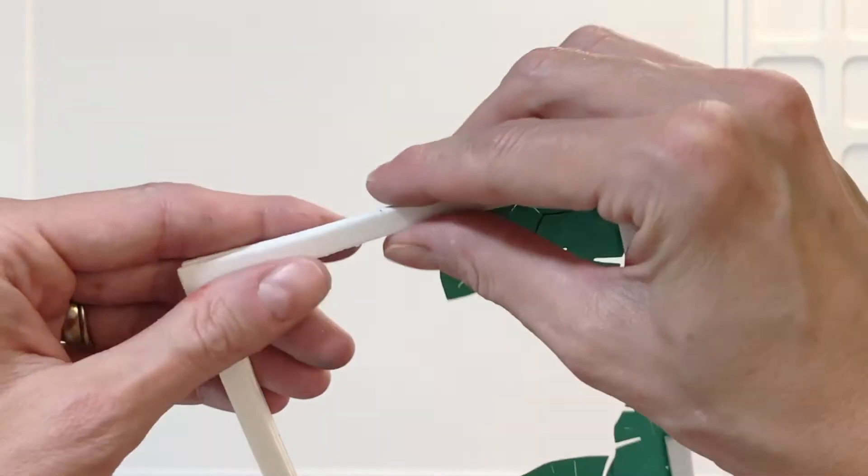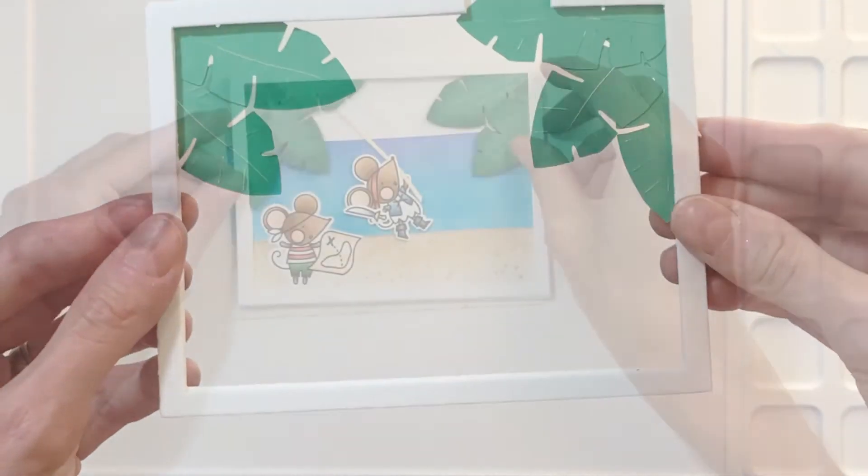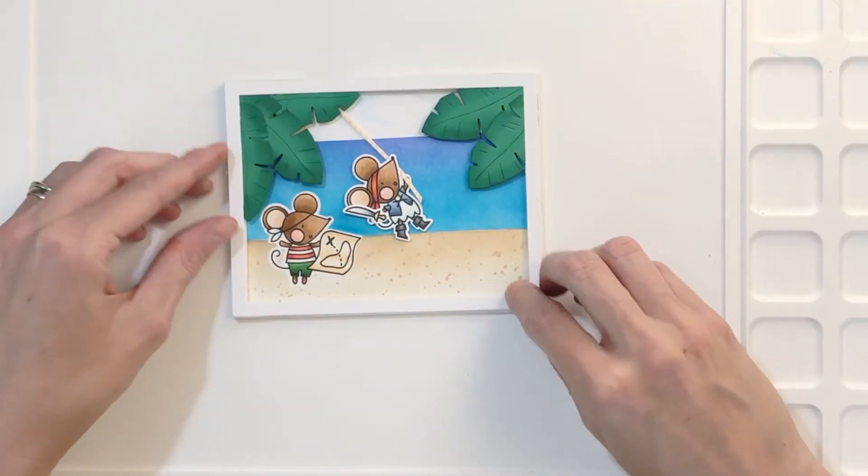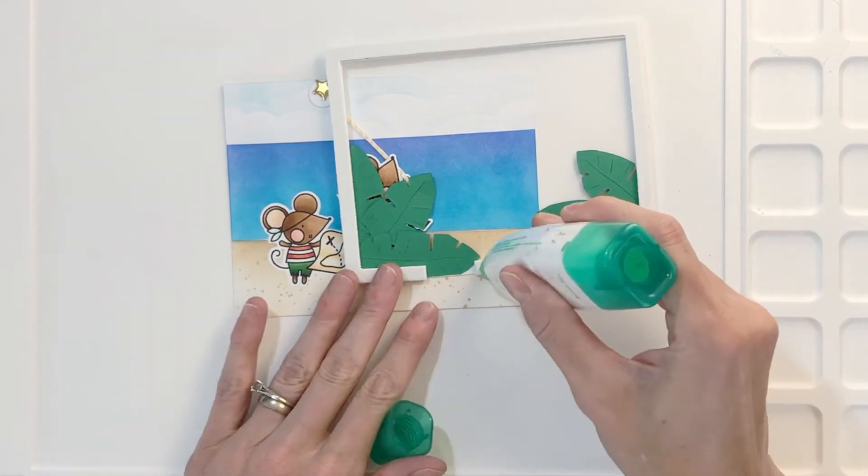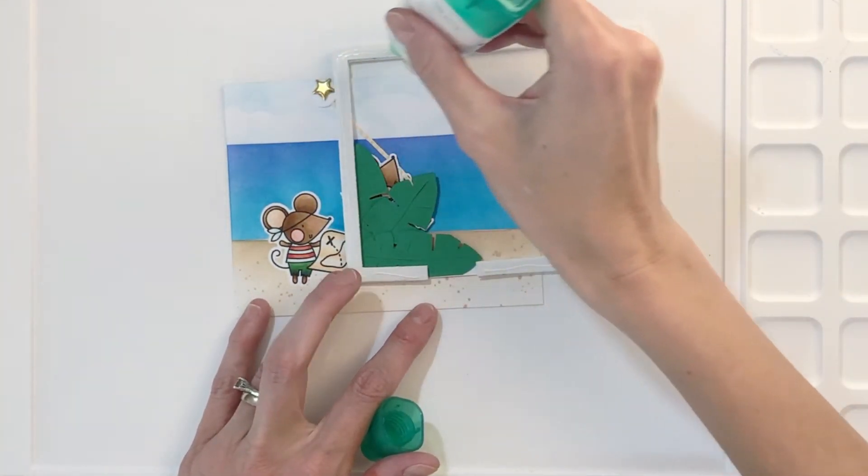The reason why we need the craft foam frames here is we need to add some dimension to compensate for that thickness of the brad. So now I'm going to kind of start to put these things together. The first thing I'm going to do is glue this frame down onto my background panel.